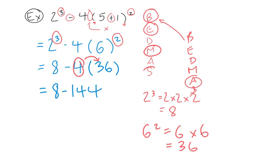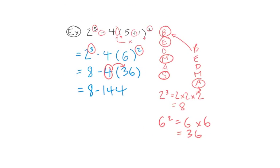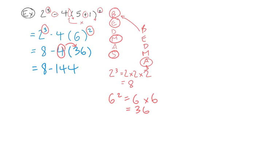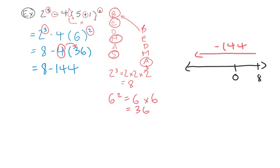That is our last operation: subtraction. Using a number line, we start with positive 8 and subtract 144, moving further left. We end up at negative 136. So 8 subtract 144 is negative 136, and that is our final answer.